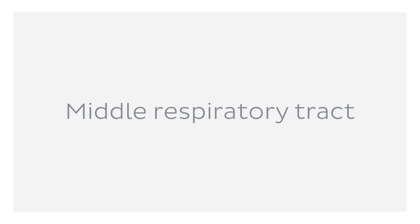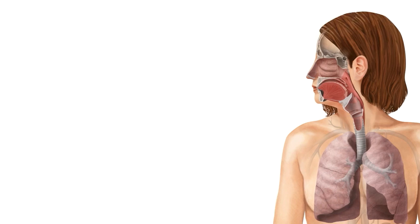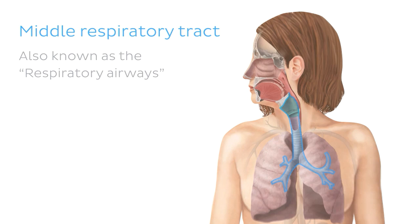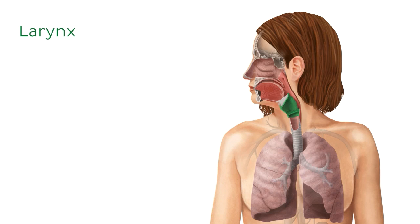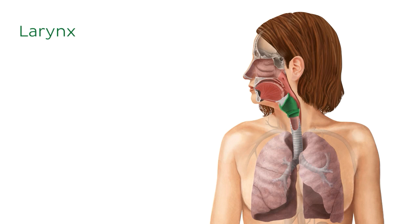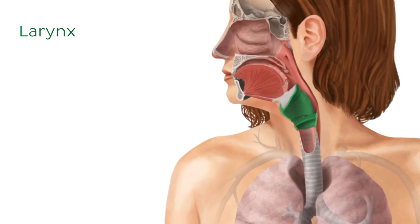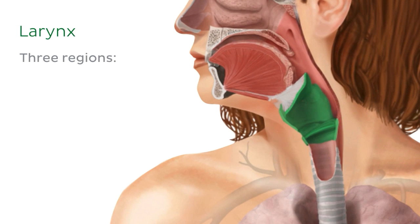Next, let's look at some of the organs of the middle respiratory tract, also known as the respiratory airways. The first organ we'll look at is the larynx, seen here highlighted in green. The larynx is attached to the hyoid bone superiorly and to the trachea inferiorly. It's comprised of many different soft and hard tissues that allow for the production of sound or speech as well as breathing. The larynx can be divided into three regions: the vestibule, the ventricle, and the infraglottic area.